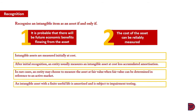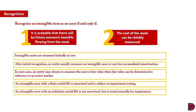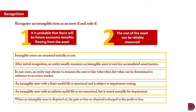An intangible asset with a finite useful life is amortized and is subject to impairment. An intangible asset with an infinite useful life is not amortized, but is rather tested annually for impairment. So lastly, when an intangible asset is disposed of, the gain or loss on disposal is charged to the profit or loss account.